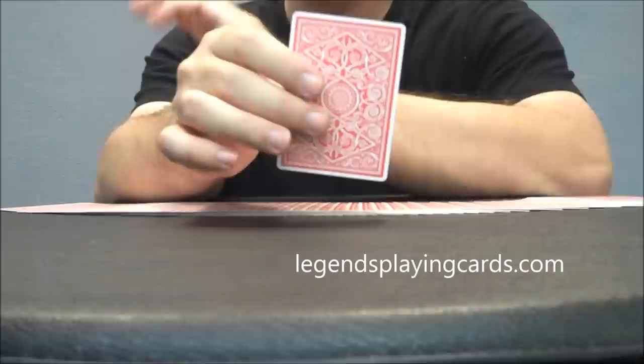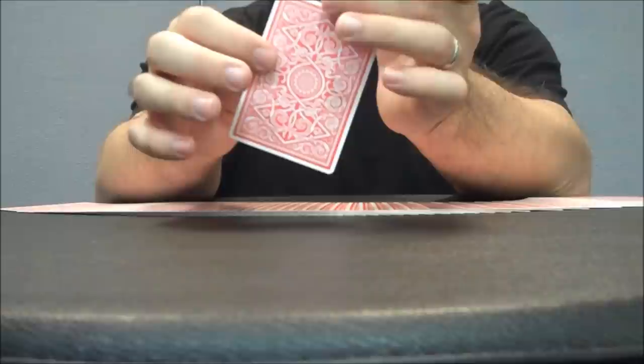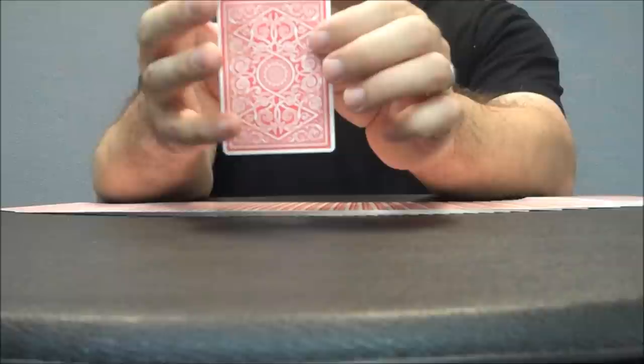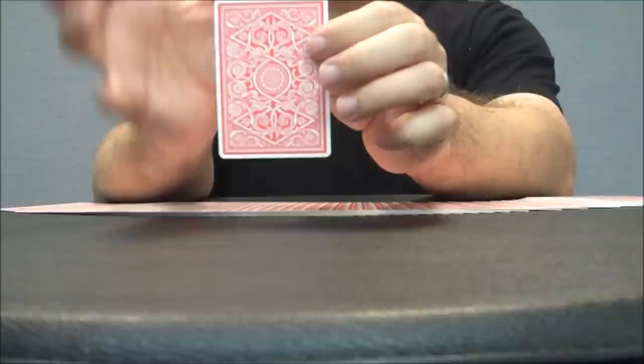If you'd like to learn more about this deck, I recommend going to legendsplayingcards.com. The back design has an extremely classic feel to it. Micro-thin white borders with a dual red border. You have this diamond design on the top and bottom with a circle design in the center, and then images of snakes and snakes' bodies all throughout.